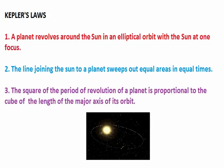The second law says that a line joining the sun to a planet sweeps out equal areas in equal times. And the third law says that the square of the period of revolution of a planet is proportional to the cube of the length of the major axis of its orbit.